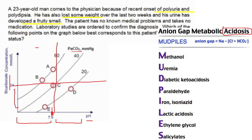By drawing those two lines, we've excluded answer choices A and B, leaving only answer choice E. So: draw a vertical line - before it is acidosis, after it is alkalosis. Then draw a horizontal line - below the bicarbonate line means low bicarbonate, which is true for any metabolic acidosis.